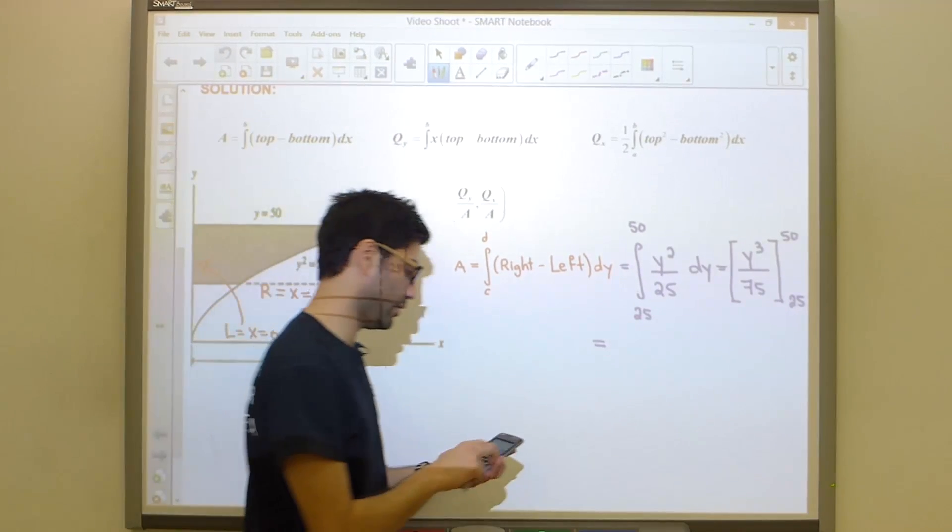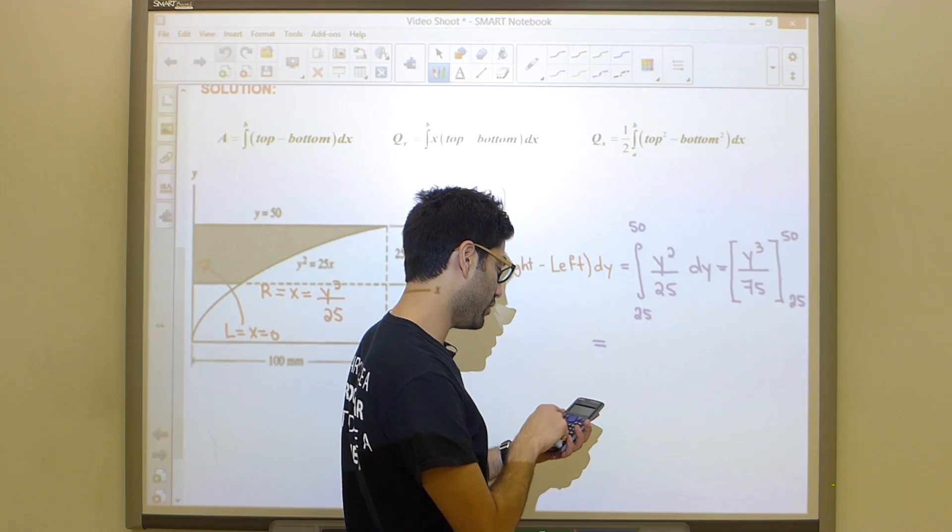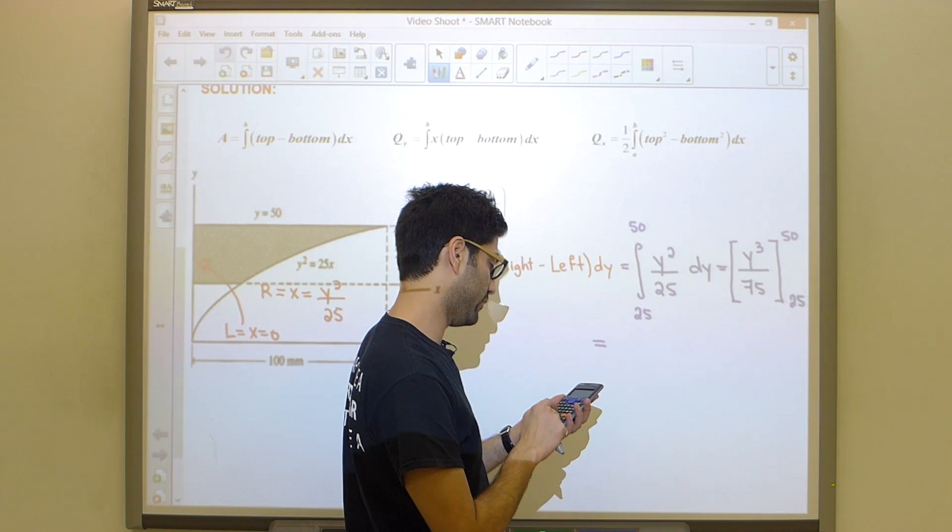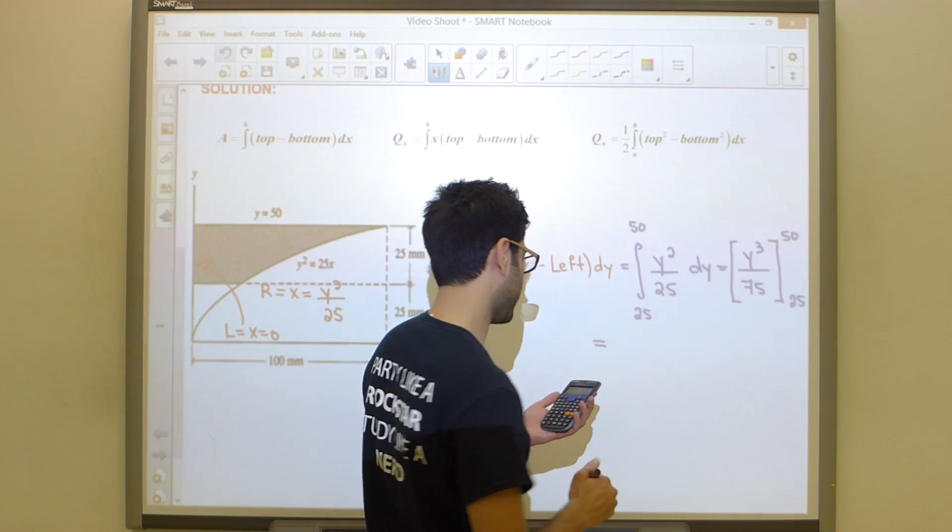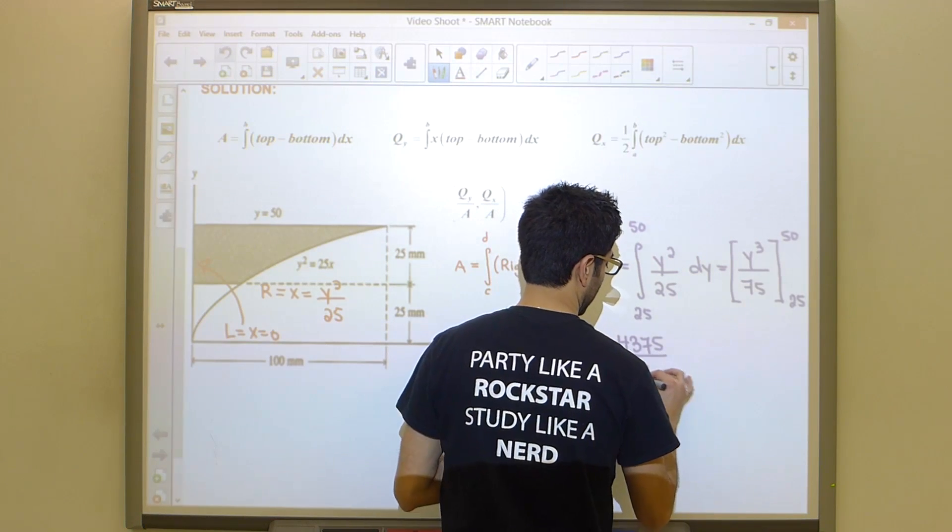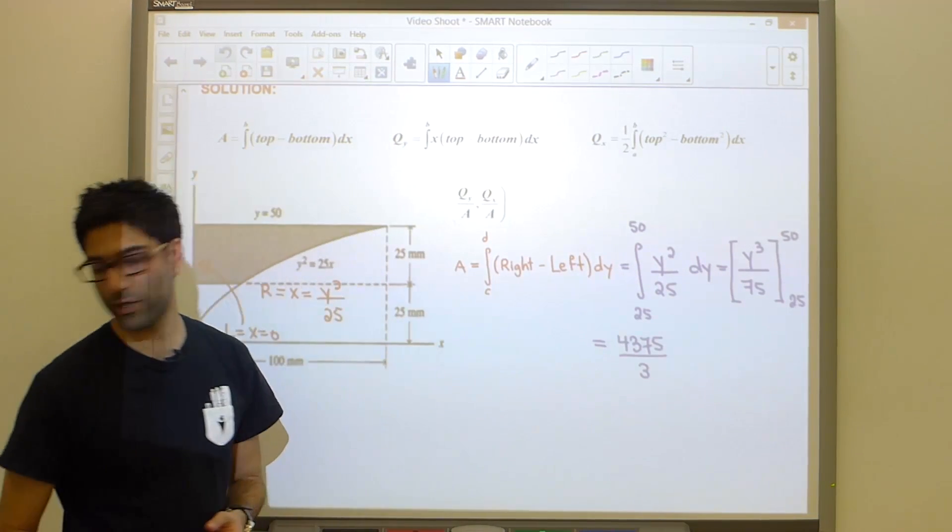It's not going to take us long to discover what this answer is. It's a matter of using our calculator a little bit. So 50 cubed minus 25 cubed, all divided by 75 gives us a grand total of 4375 divided by 3. So that is our area.